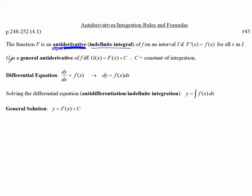g is a general anti-derivative of f if and only if g of x equals the anti-derivative of f, capital F of x, plus c, where c is a constant of integration.